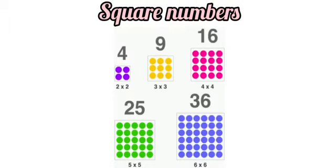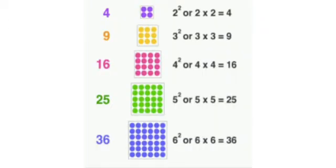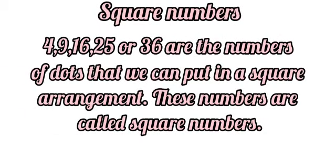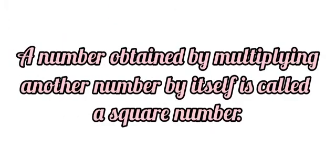It means to make a square, each horizontal and vertical row needs to have an equal number of dots. 2×2=4, 3×3=9, 4×4=16, and so on. If we take a number obtained by multiplying another number by itself, we can put the dots in a square arrangement. 4, 9, 16, 25, or 36 are the numbers of dots that we can put in a square arrangement. These numbers are called square numbers.